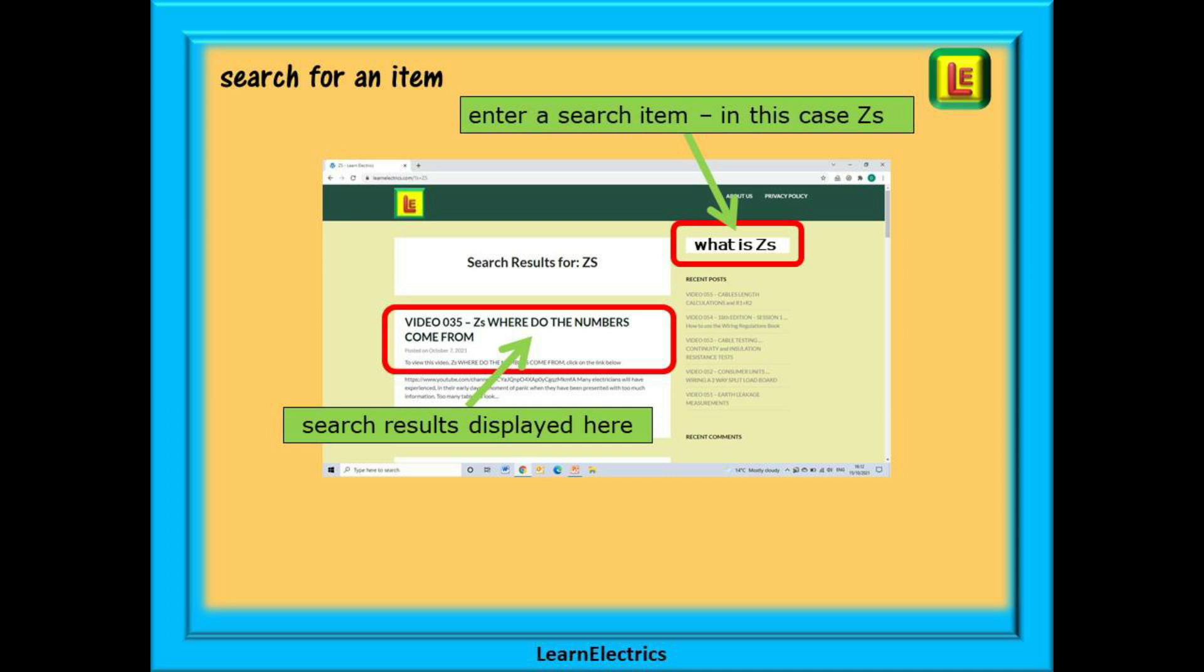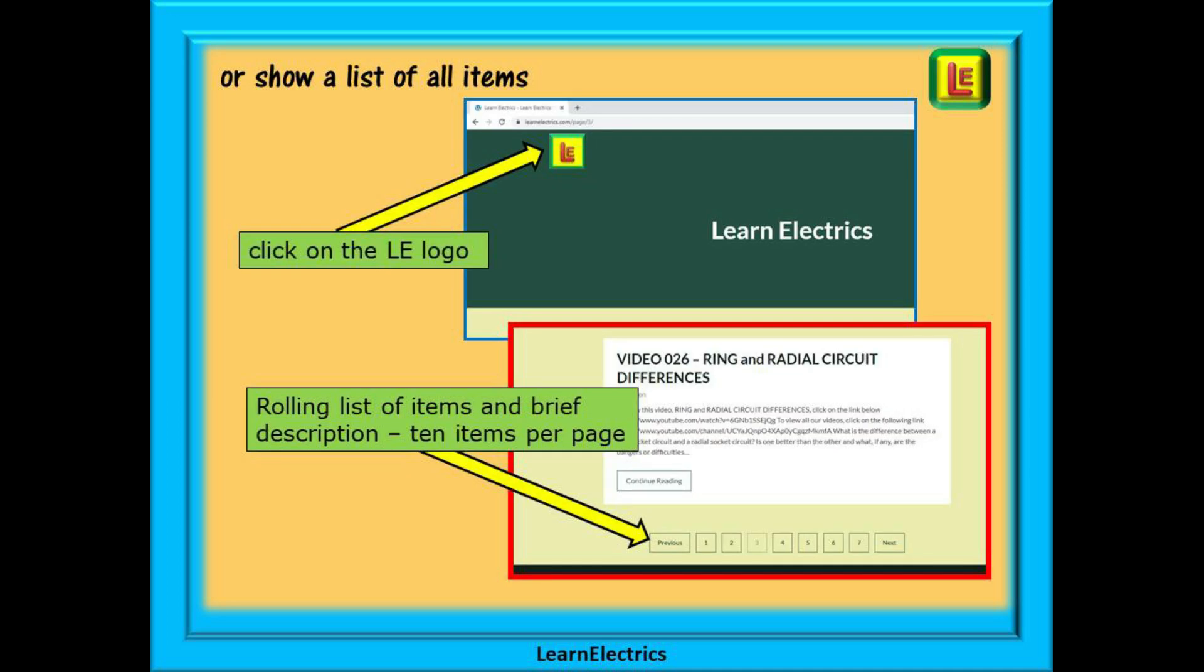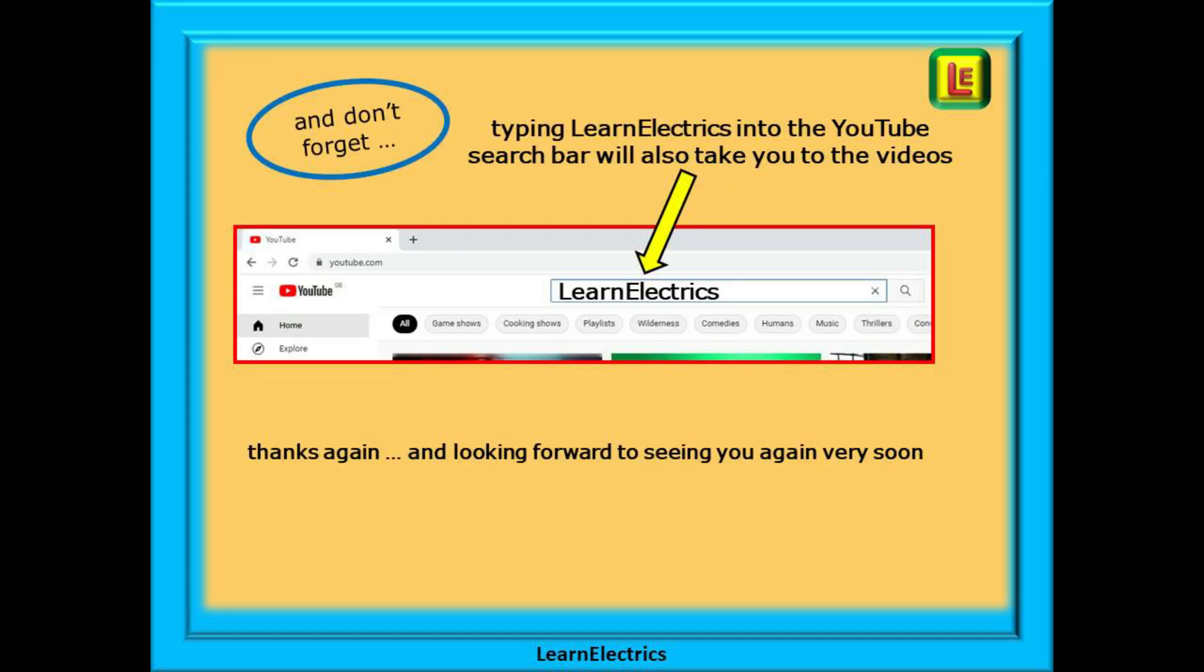Or you can browse through a list of all the available items and videos. To do this click on the LE logo on the left of the home page and all our items and videos will be shown. There will be 10 items shown on each page and at the bottom of each page is a page selector, page 2, 3, 4 etc that will bring up the next 10 items or videos in the list. And don't forget you can also type in LearnElectrics all one word into the YouTube search bar to go directly to our channel at any time from any computer. We are constantly adding new videos to our channel. Don't miss the next one. Once again, thanks for watching and we hope to see you again very soon.